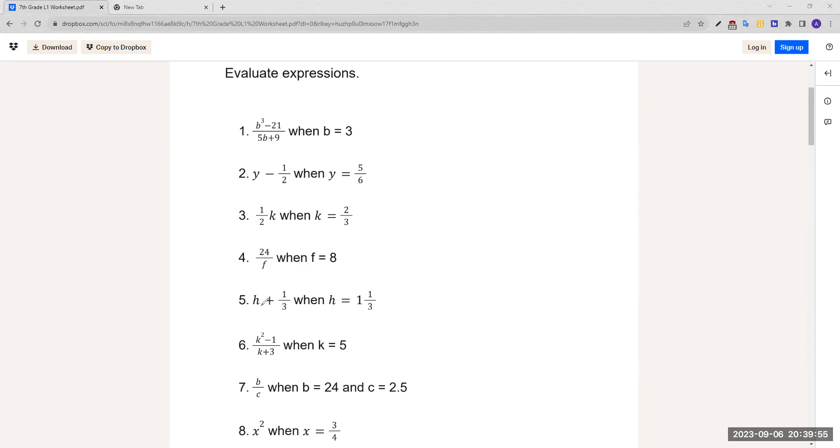For number 5, h plus 1 over 3 when h equals 1 and 1 thirds. We plug in 1 over 1 thirds plus 1 thirds. 1 and 1 thirds is the same as saying 3 over 3 plus 1 over 3, because 3 over 3 is just 1. So now when we add this, we have 4 over 3.